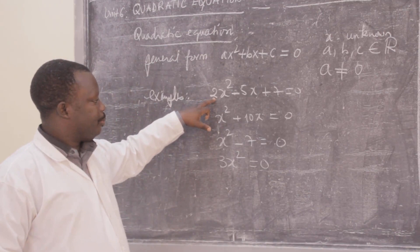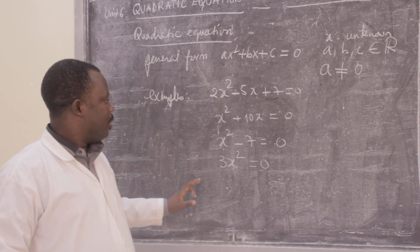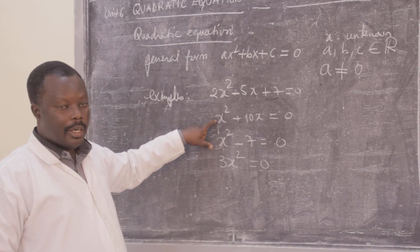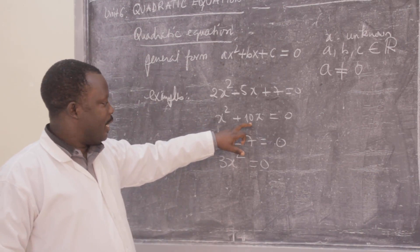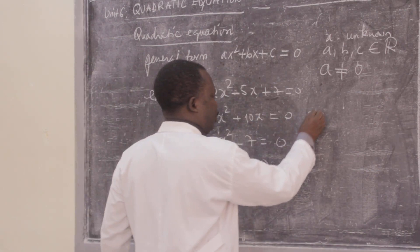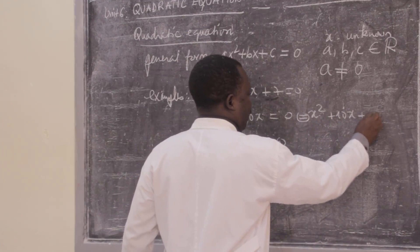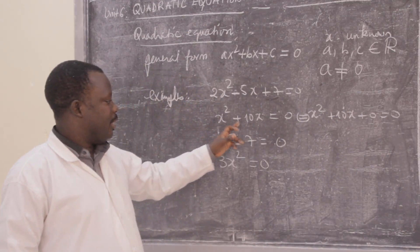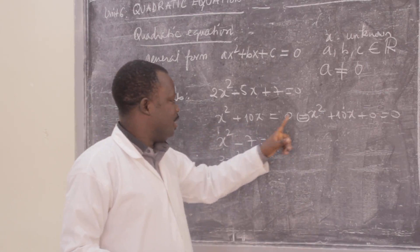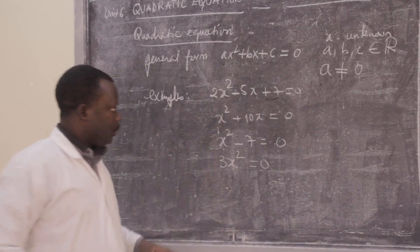In example 1, a = 2, b = -5, and c = 7. In example 2, the coefficient of x² is 1, so a = 1, b = 10, and c = 0, because the equation is equivalent to x² + 10x + 0 = 0. So c = 0 — there is no independent term.